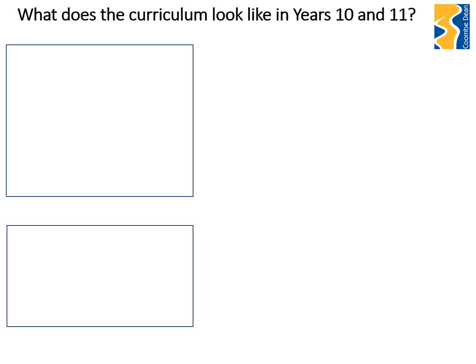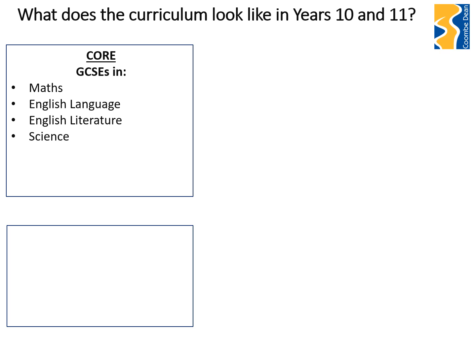To start with, the core curriculum comprises GCSEs in Maths, English Language and English Literature. Science — what we call combined science — is the standard offer, and combined science is worth two GCSEs. I'm going to take a pause here to talk briefly about combined science and separate science, because there is a difference.